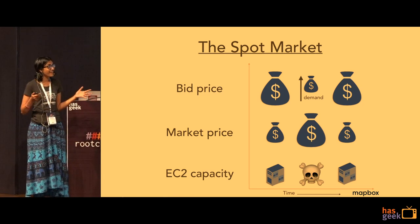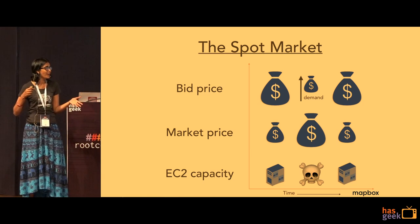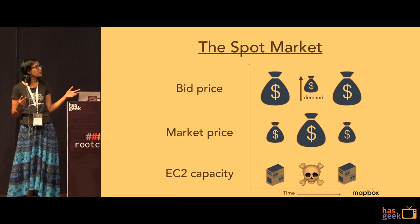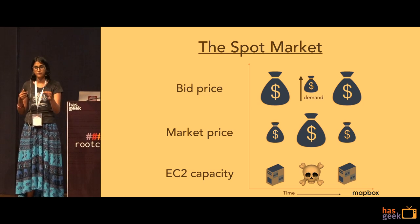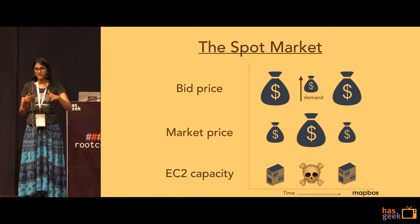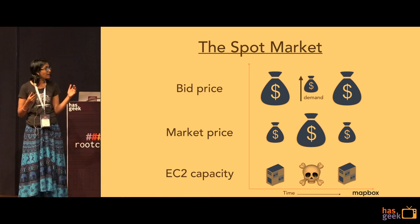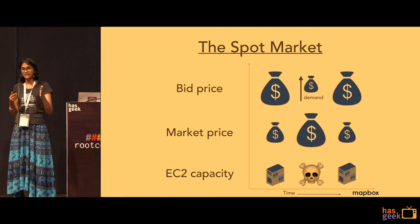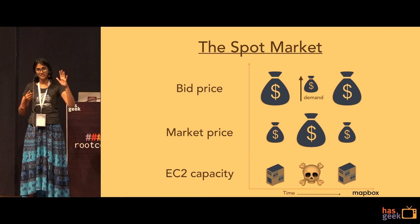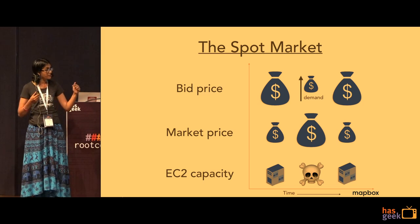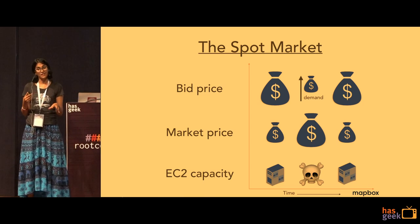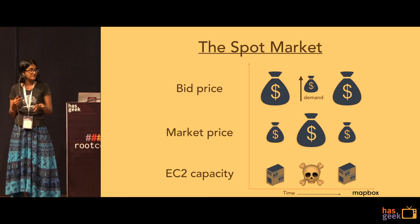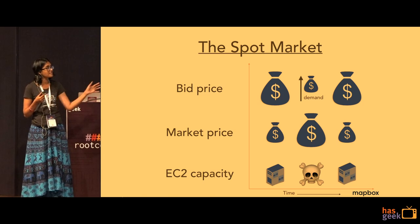The Amazon spot market works on similar strategies to gambling. You have a bid price for an instance type — depending on how much CPU and memory you want, you set a bid price. If your bid price is greater than the market price, your request is fulfilled. The market price constantly fluctuates because it changes when demand for a certain instance type increases. When the market price goes higher than your bid price, your instance is terminated with a two-minute warning. That's all you get. And when the spot market stabilizes and your bid price goes higher than the market price again, your instance will come back to life.